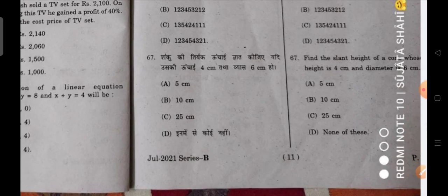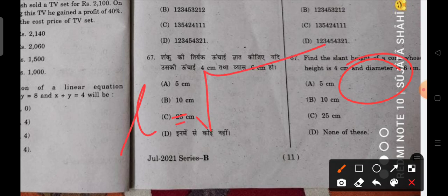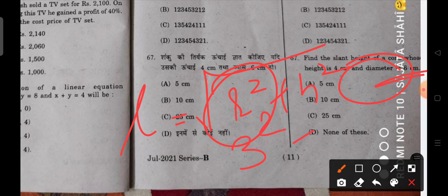Next, find the slant height of a cone whose height is 4 cm and diameter is given. The formula is under root r square plus h square. Diameter means radius is half, so 3 square plus 4 square. You will solve it and it will be 5 cm. 5 is the correct answer.